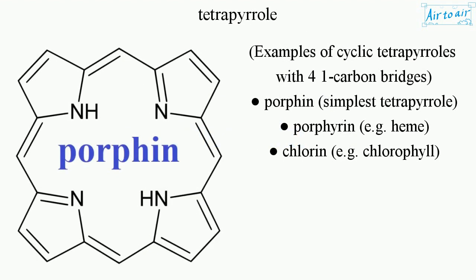Examples of cyclic tetraphols with four one-carbon bridges include porphyn, the simplest tetraphol; porphyrin, e.g. heme; and chlorin, e.g. chlorophyll.